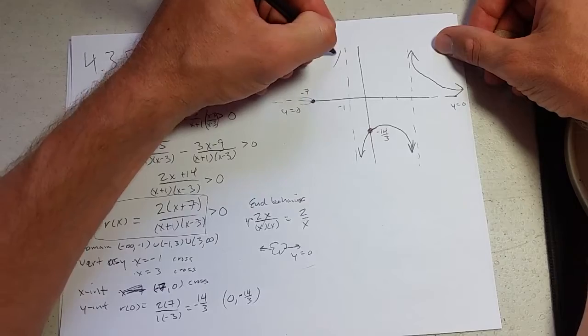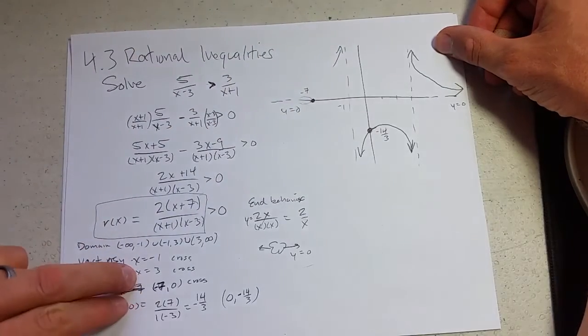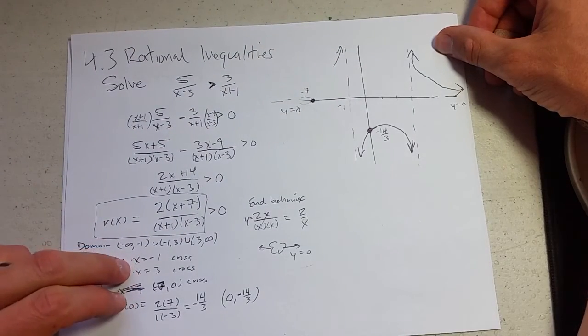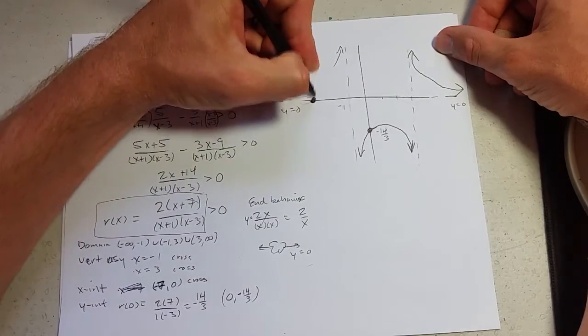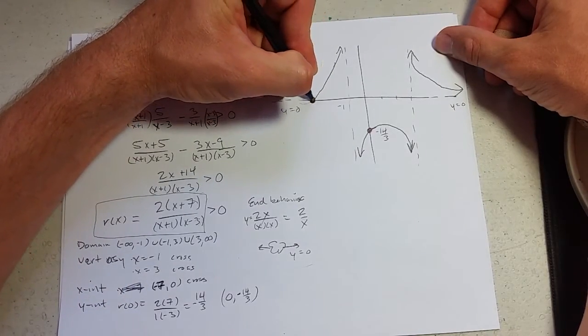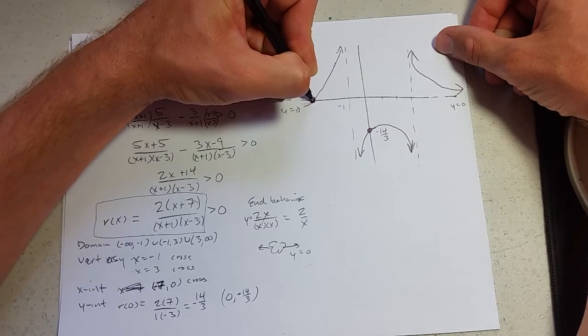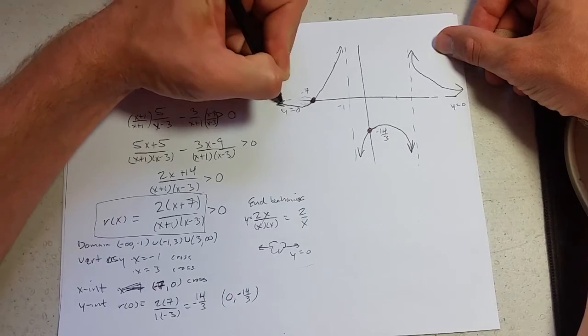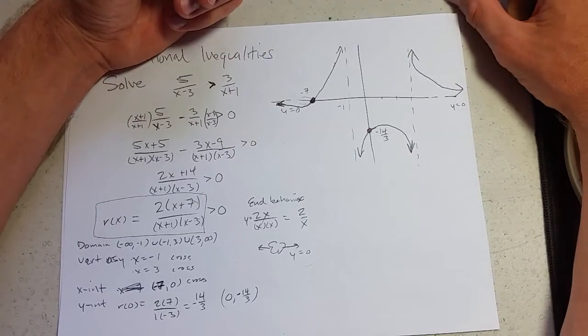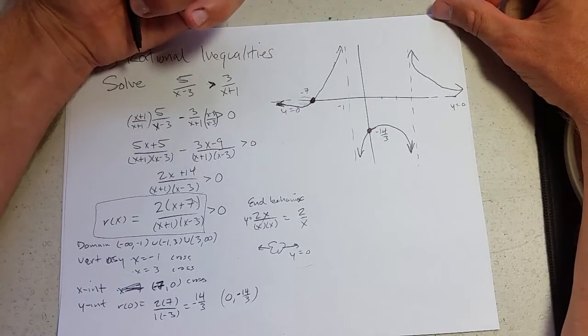Now, over here, I have to cross again. I got that from our negative 1 cross behavior there. I have a cross x-intercept, so I will cross the x-intercept. Now, I will be going down here, but I also have to approach the y equals 0 horizontal asymptote as well. So, here's our final graph.